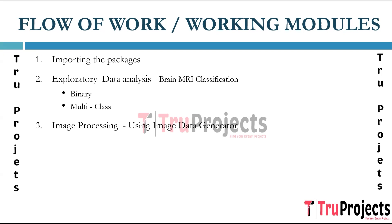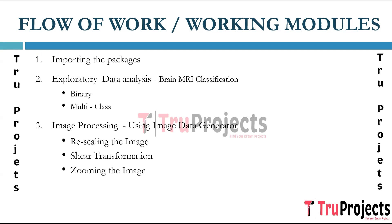The next step is image processing. Image processing is applied using an image data generator tool that generates augmented images to enhance the dataset's diversity and improve model generalization. Here we rescale the image by normalizing pixel values to a consistent scale, apply shear transformations to enhance model robustness, apply zooming transformations for varied perspectives, introduce horizontal flips to diversify the dataset, and reshape the image by adjusting dimensions for compatibility with the chosen model architecture.